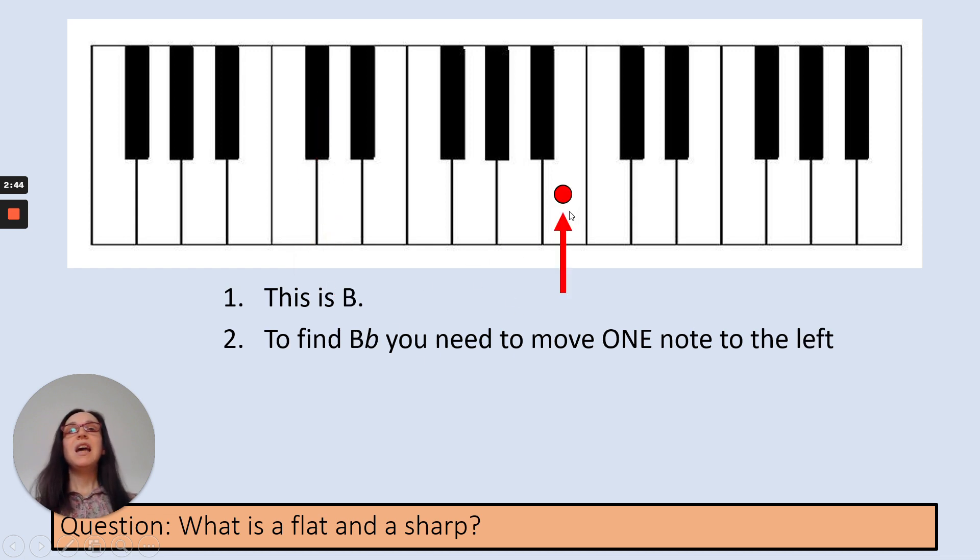So that's a B, and to find B flat, you move one note to the left, and you play this black note here, and that's your B flat note.